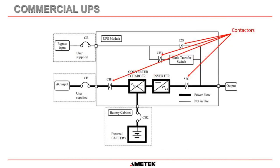Another thing you'll notice about commercial UPSs is that there are contactors inside the UPS — the circuit breakers are actually the buckets inside your MCC. Contactors have moving parts, coils, and can pull in and drop out. The contacts can weld and the coils can burn out. Unfortunately, contactors can and do fail. We do not like using contactors in our UPS, but in many commercial UPSs they are used.